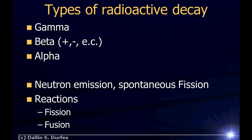You also get something called neutron emission, which is just basically spitting out a neutron, and you can get spontaneous fission where your nucleus splits in half and spits out some neutrons. We don't usually talk about neutron emission and spontaneous fission as much — they're not part of the big three — mainly because these tend to happen fairly quickly. Usually something else has to decay first; it decays into something that is not stable, which very quickly decays by neutron emission or spontaneous fission.